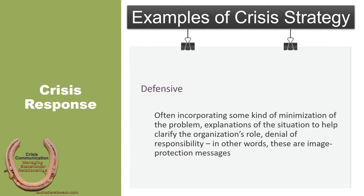The first example of a crisis strategy is the defensive strategy. This often incorporates some kind of minimization of the problem, explanations of the situation to help clarify the organization's role, denial of responsibility — in other words, these are seen as image protection messages. Defensive responses may often be necessary, particularly when the organization is accused of something it didn't do or has to defend itself against attacks. However, research is increasingly demonstrating that these kinds of response strategies are not particularly endearing to stakeholders, so in many cases they should be seen as risky kinds of response.